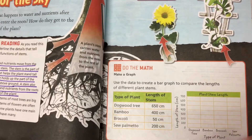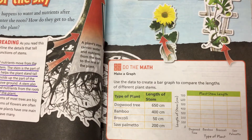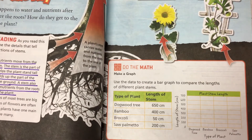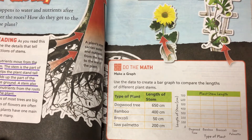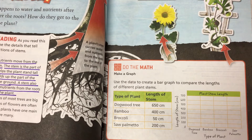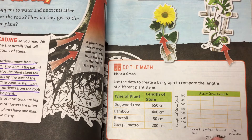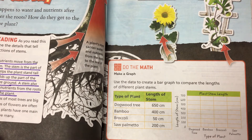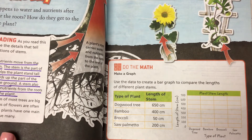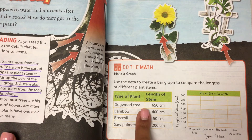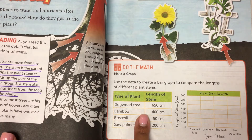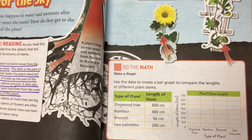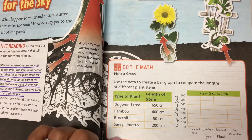Now go ahead and take a few minutes to complete the task on the bottom. Use the data to create a bar graph to compare the lengths of different plant stems. You have a dogwood tree, bamboo, broccoli, and saw palmetto.